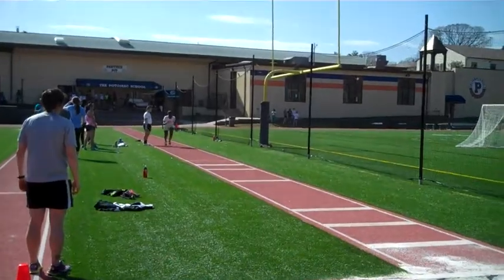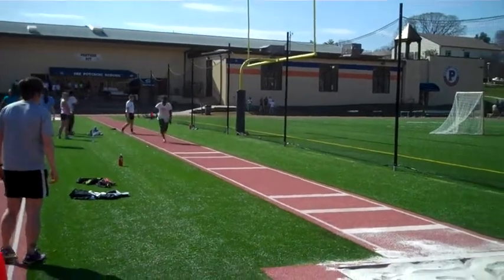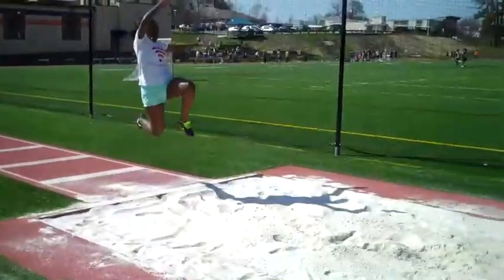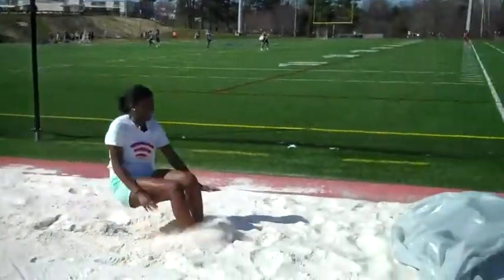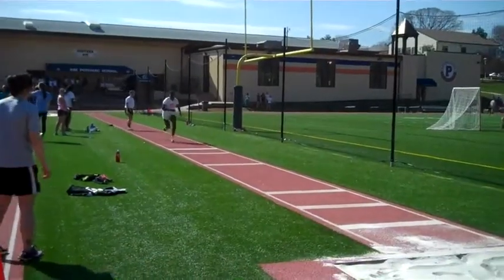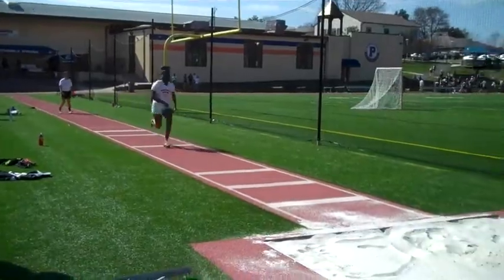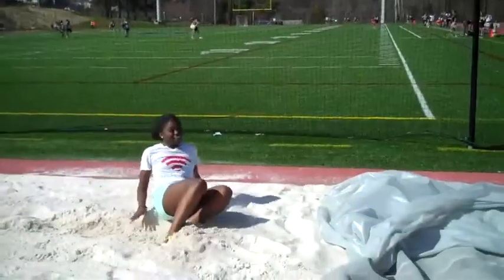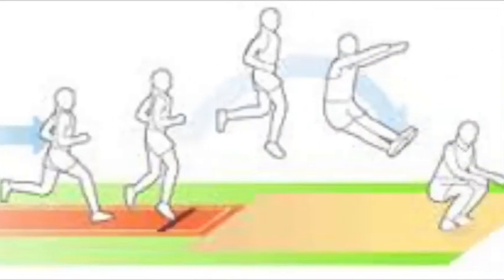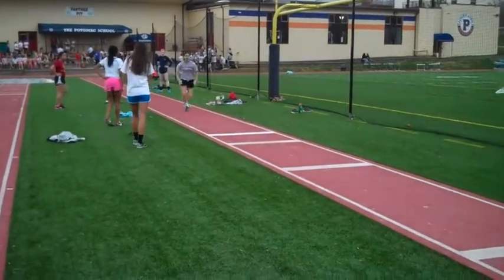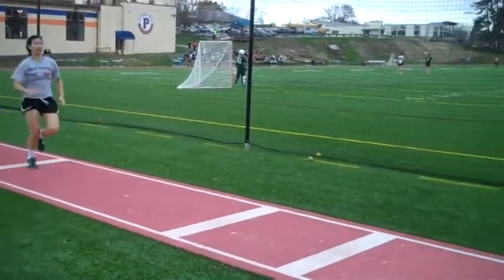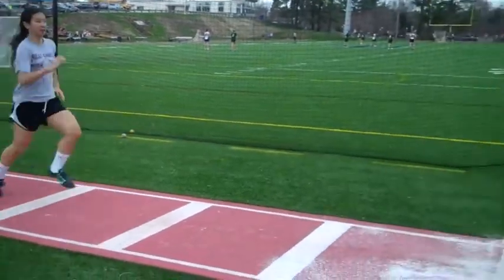First, a long jumper needs to count his or her steps and start at the same position every time to ensure that he or she will not go over the take-off board. Consistency in running down the platform is important too, because if you run differently from when you counted the steps, it might change the results of your strides. A person must start at least six strides back from the take-off board to ensure they build enough speed when they jump.